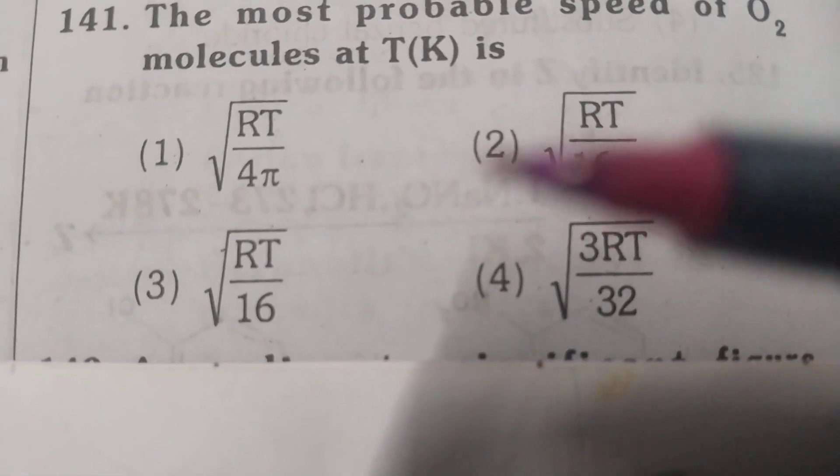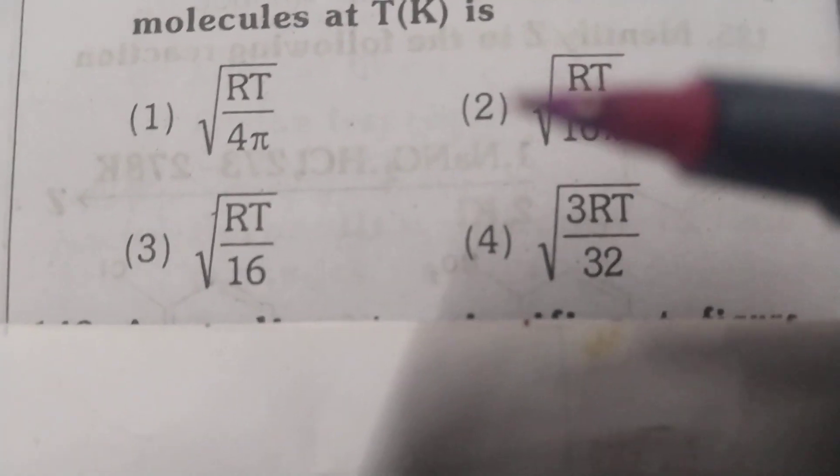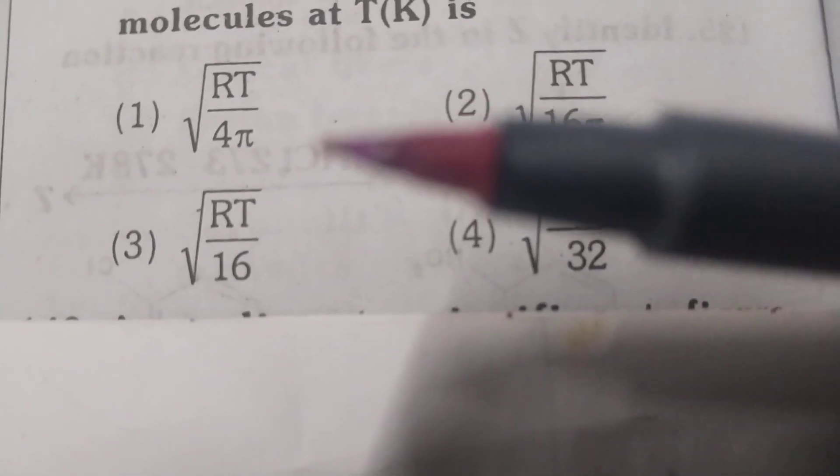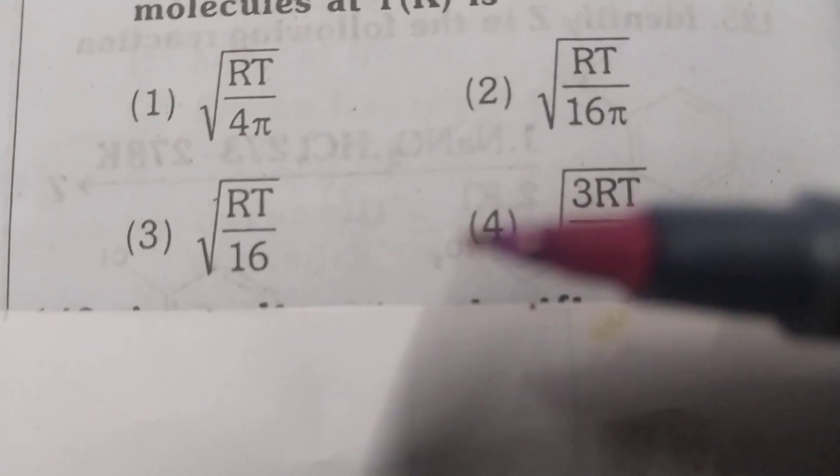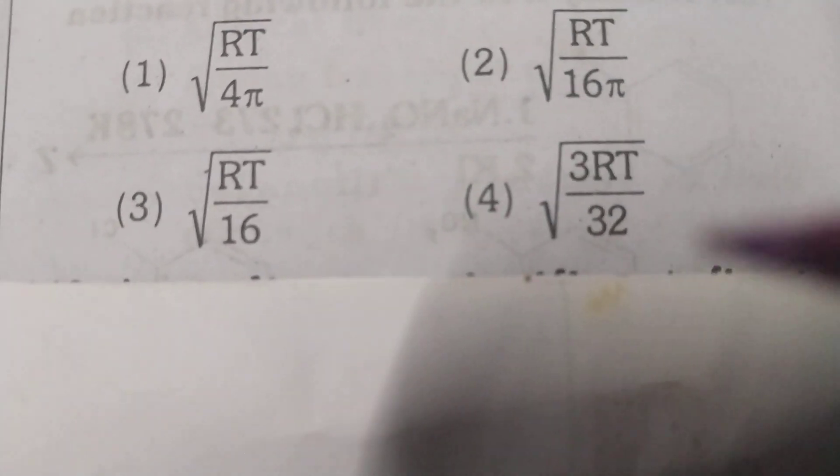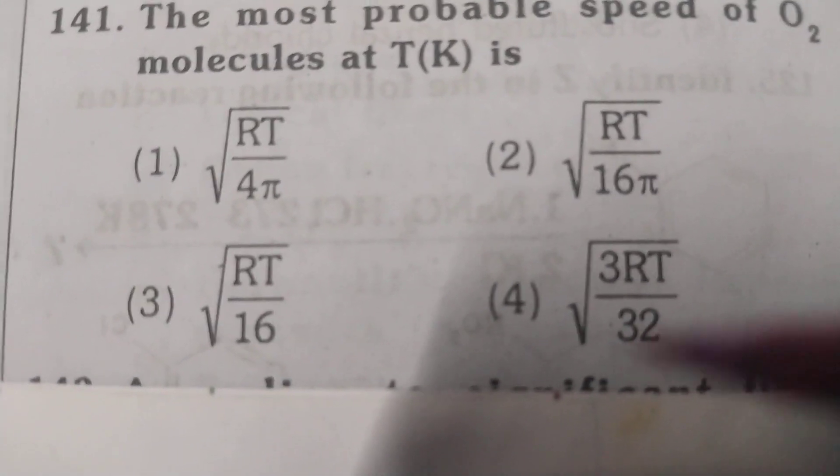The most probable speed of oxygen molecules at T Kelvin. Four options were given: square root of RT by 4π, square root of RT by 16π, square root of RT by 16, and square root of 3RT by 32.